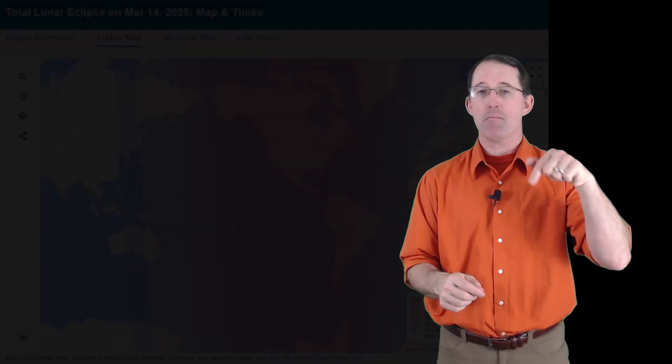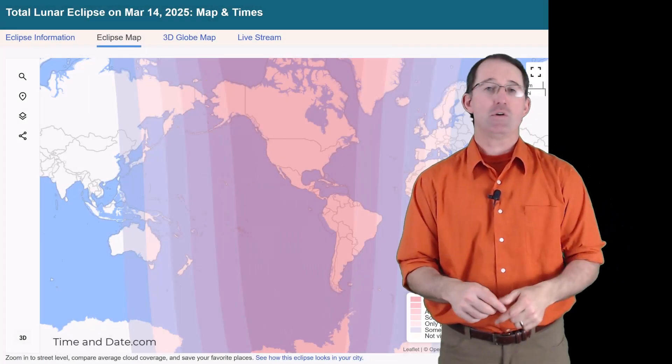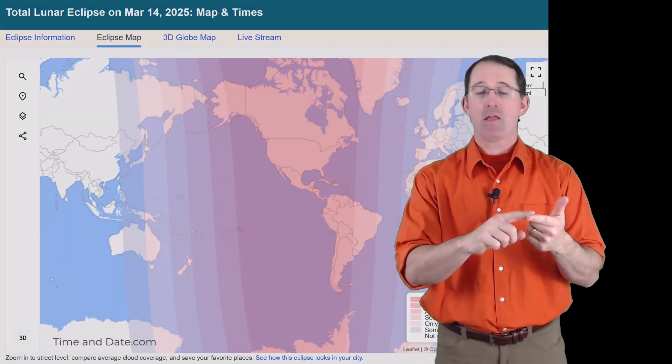Now, this video is going to be chopped up into chapters, so you can skip forward to get the details for whichever event you're specifically interested in, but also make sure you take a look at the show notes, because that's where I have links to maps for each eclipse, so you can get the exact time for each phase of each eclipse based on your exact location on the globe.